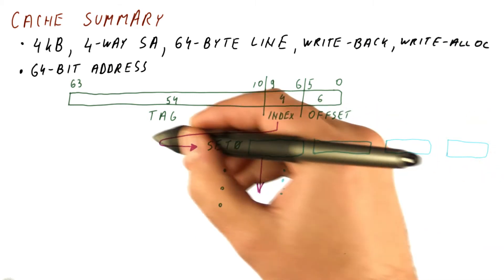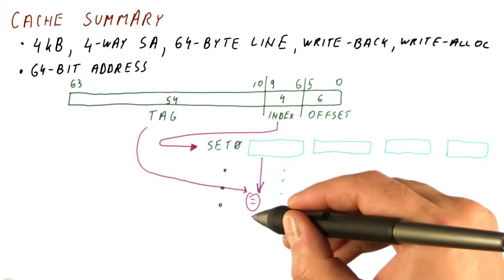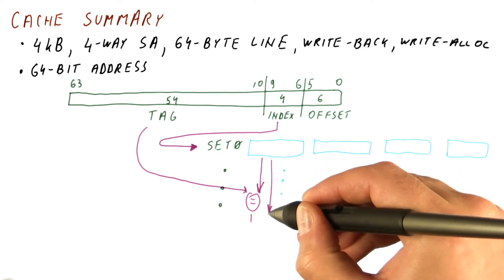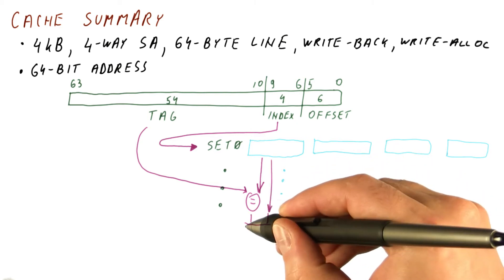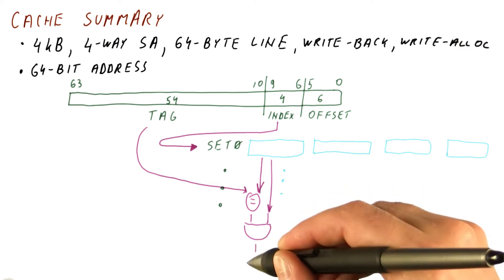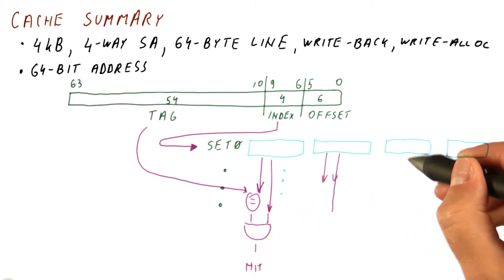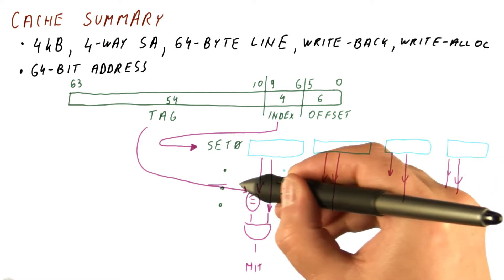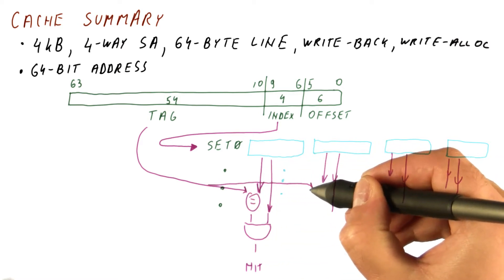We then read the tag and valid bits for all of the blocks in that set. The tag bits that we read are compared to the tag. The valid bit needs to be also 1 in order to have a hit. And we do this for each of these blocks in the set simultaneously.